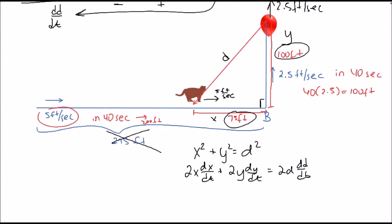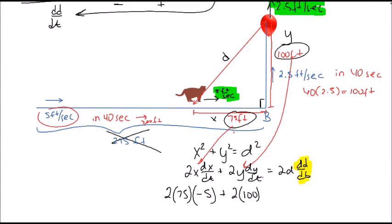Now let's fill everything in. We're looking for dd/dt. We know x and y at this instance: 75 and 100. We also know dx/dt and dy/dt. So, 2 times 75 times dx/dt. Now the dx/dt is 5, but realize that x is shrinking, so this is negative 5. Then 2 times 100, that's our y value. The dy/dt is 2.5, positive because that's still expanding.